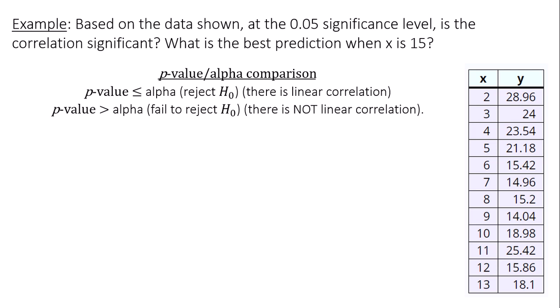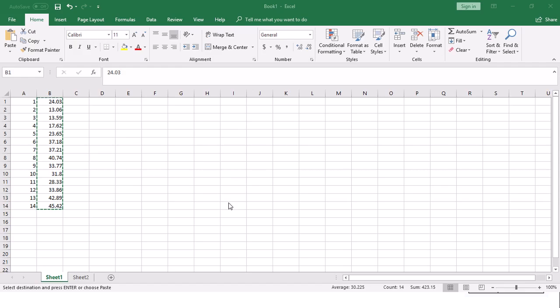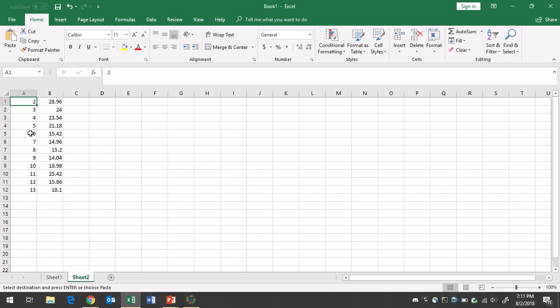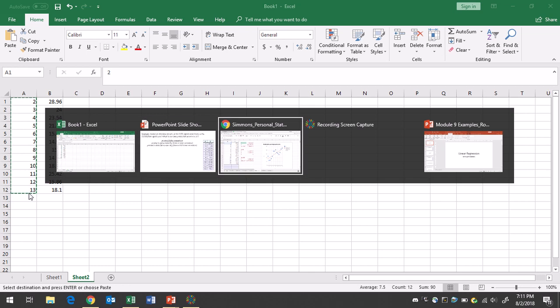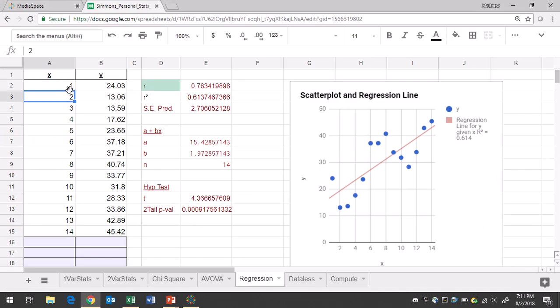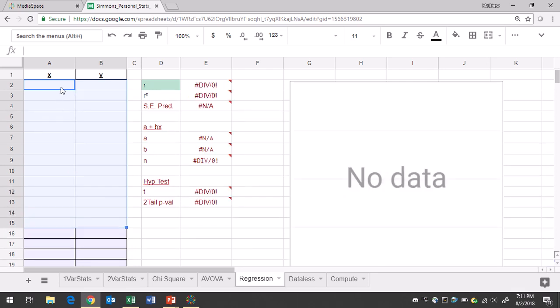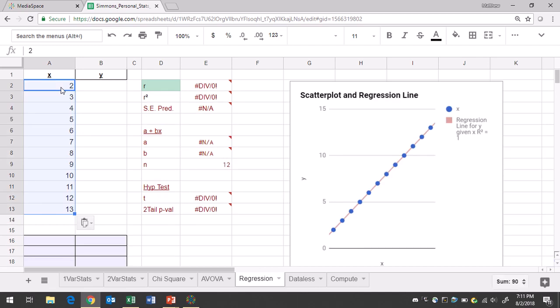So once again, I can take this data and put it in Google Sheets. I already have it in an Excel spreadsheet. I copied it over from the question. I'm going to copy it over column by column into the Google Sheets spreadsheet. Go ahead and clear out any old data you have, and paste your X's.